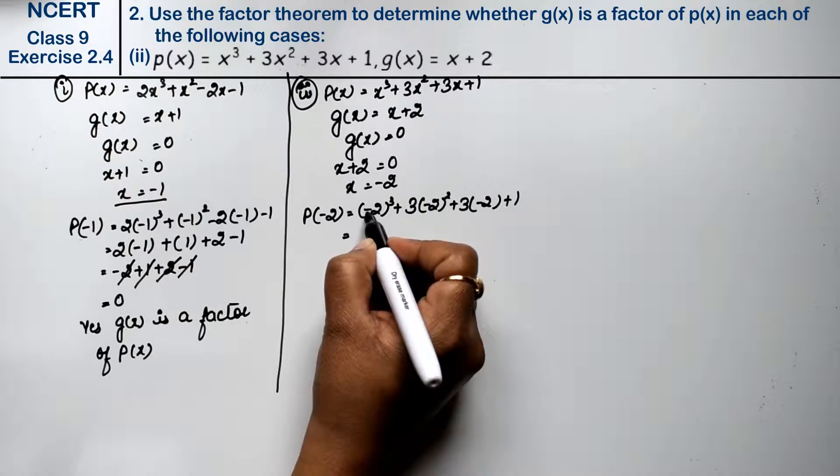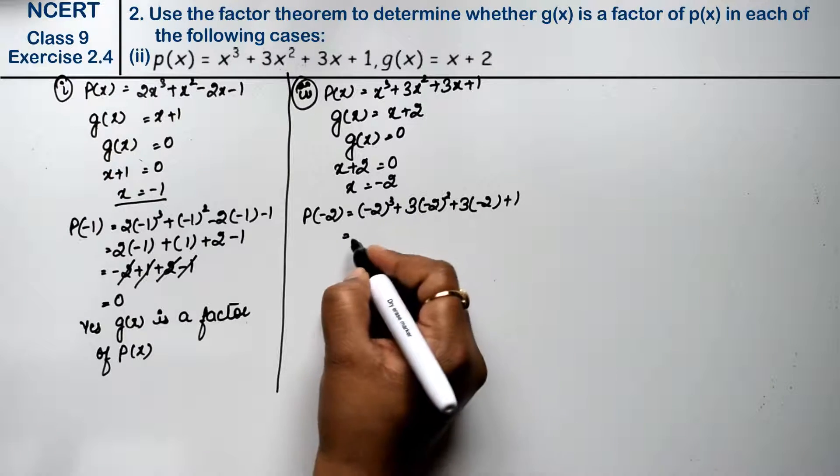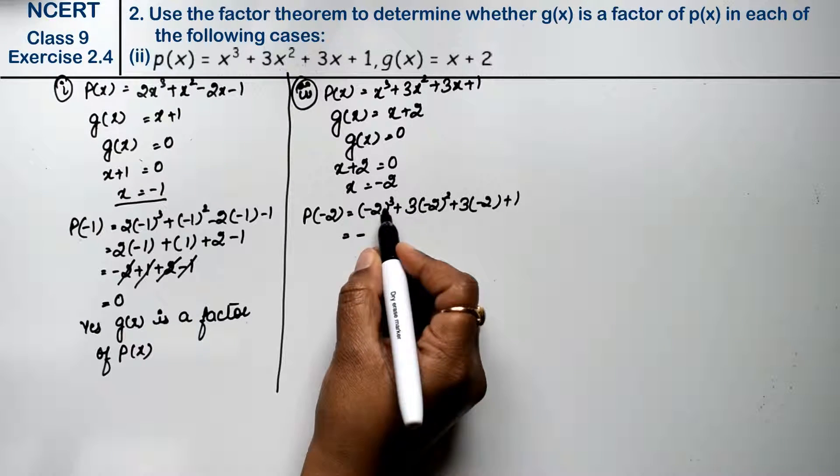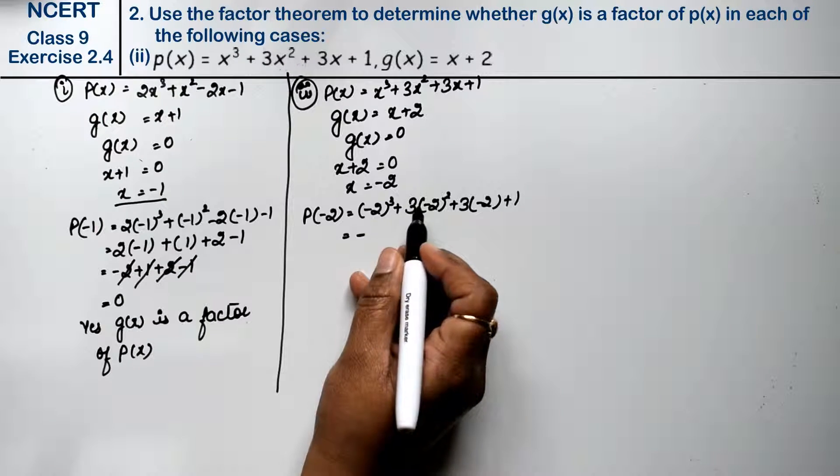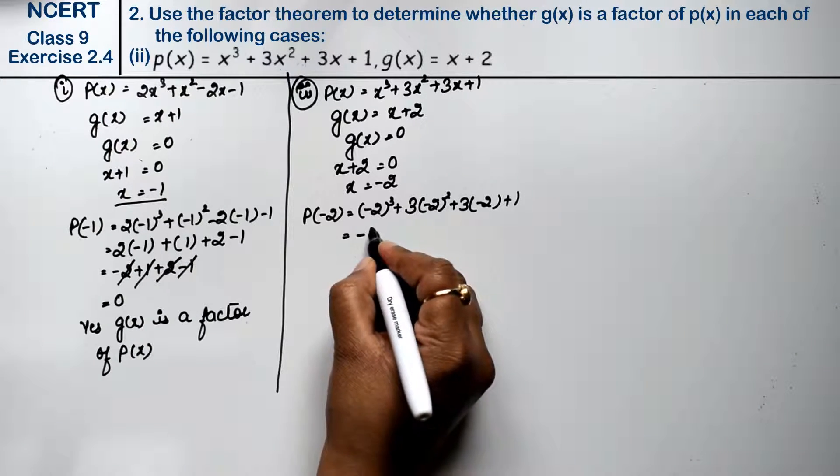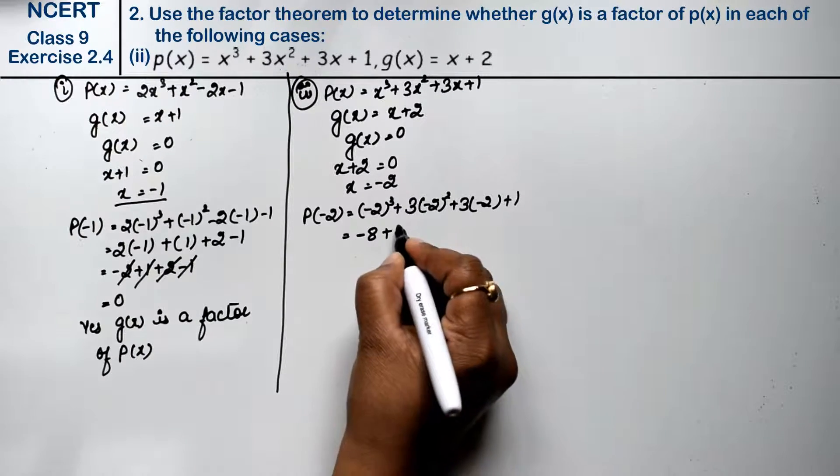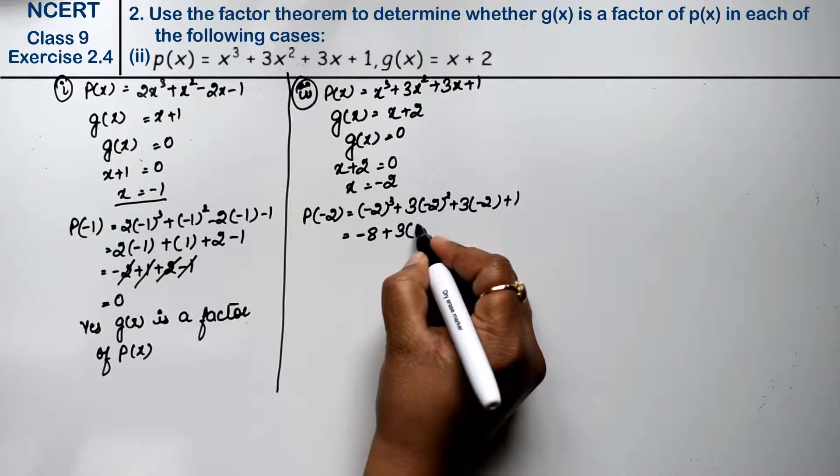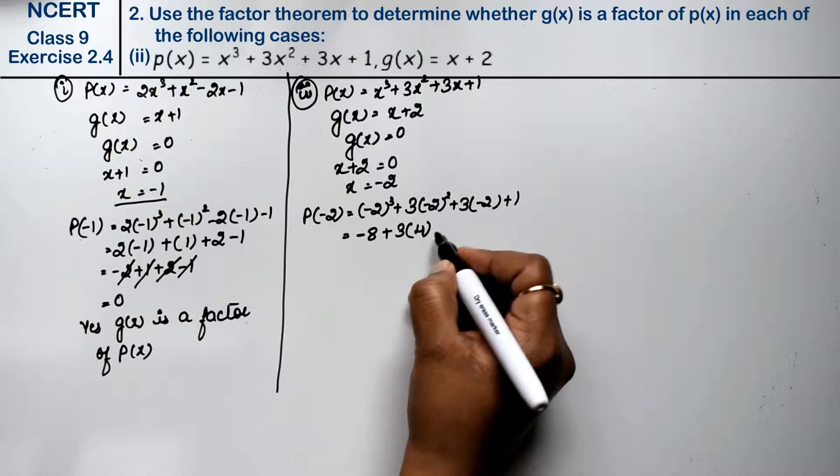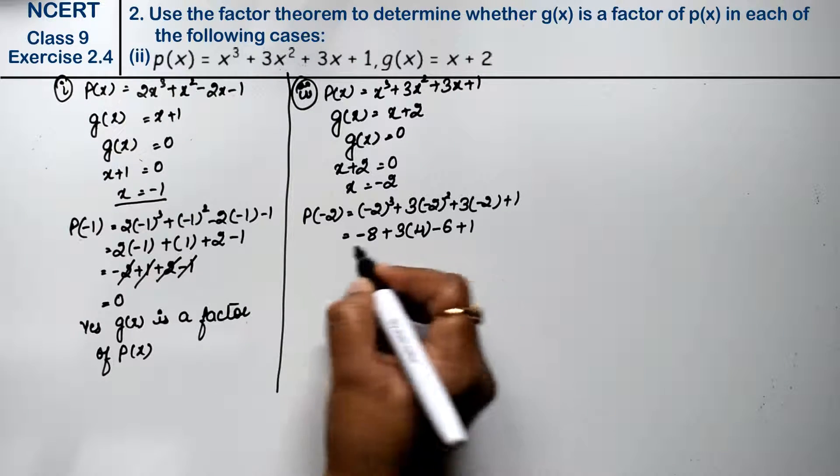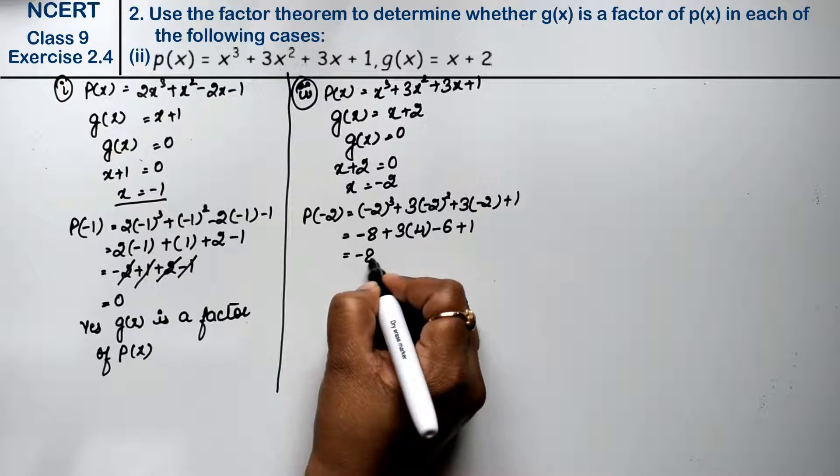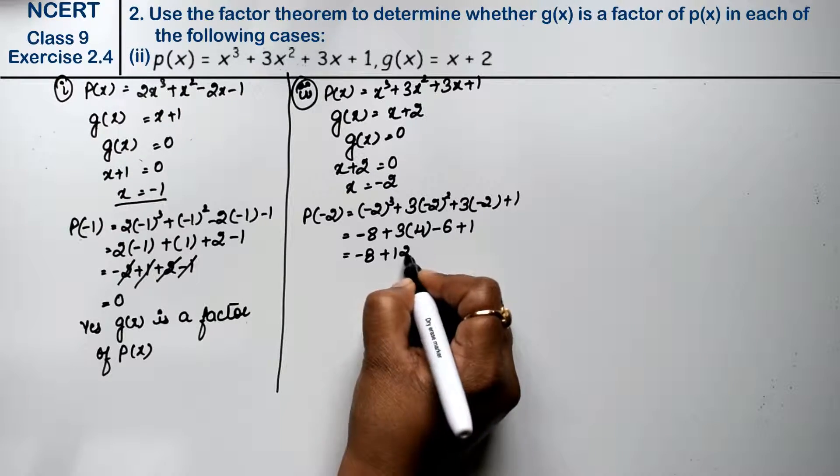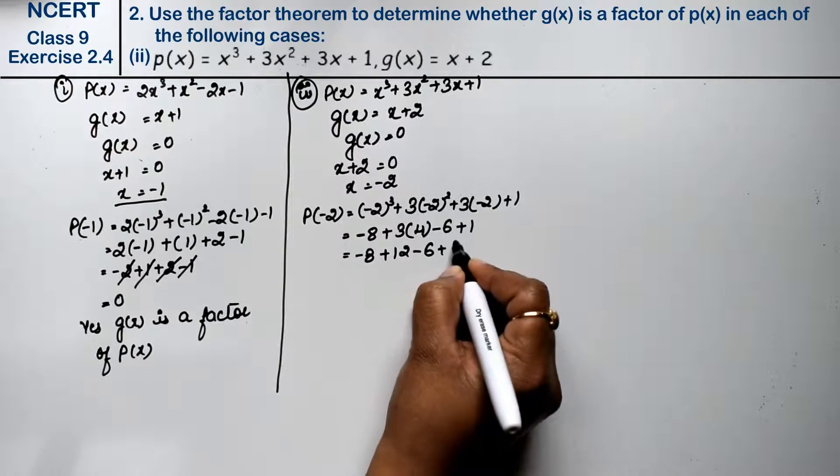And 2 cubed: 2 × 2 = 4, 4 × 2 = 8. Plus 3: minus squared is plus, so 2 × 2 = 4. Plus: minus times minus, so 3 × 2 = 6. Plus 1.